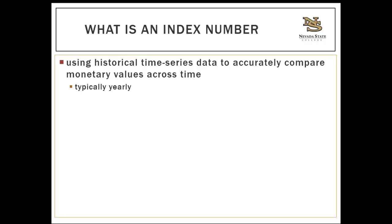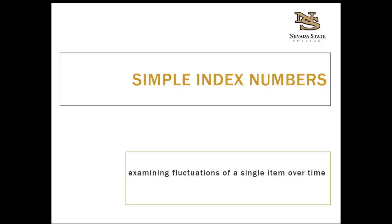Index numbers are used for time series data analysis — using historical data to accurately compare monetary values across time, most often on a yearly basis. You can answer questions such as: how much has the cost of living changed since 2005? Or is my raise comparable to the cost of living increase? Those questions require more sophisticated index numbers than the simple index number, which looks at a single item. Cost of living inflation is based on more than one item, which is what weighted aggregate price index numbers address.